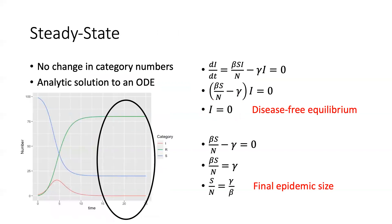An important thing about ODE models is that we can use them to solve for what we call the steady state. Steady state means there's no change in category numbers — it's an analytical solution to an ODE. It can be very useful from a disease-understanding perspective. Since steady state means no change in category numbers, you can set any of these three equations — DS over DT, DI over DT, or DR over DT — equal to zero. Setting them equal to zero says there's no change, which in the case of DI over DT means new infections equal recoveries.